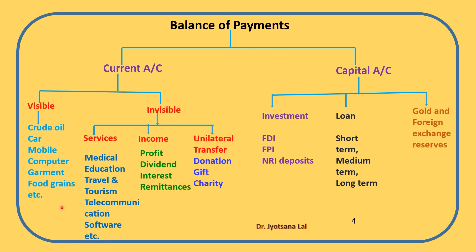Under the invisible items, we can classify three types: services, income, and unilateral transfer. Under services, various services are exported to or imported from other countries, such as medical services, education, health services, travel and tourism, transportation, and communication. Nowadays software services are continuously increasing in international trade. All these are recorded in the service account.